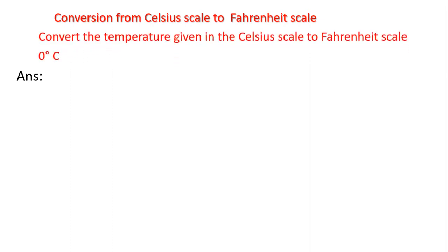Here is an example: convert the temperature given in Celsius scale to Fahrenheit scale. The given temperature is 0 degrees Celsius — we write 'C' in capital to denote Celsius. To convert this to Fahrenheit, we have to multiply the given degree with 9 by 5. Since the given temperature is 0 degrees, I wrote 0 into 9/5.